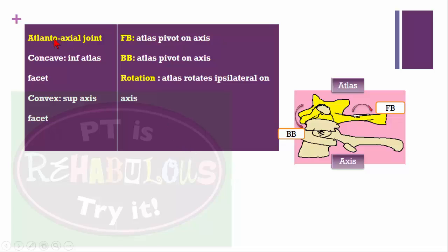Arthrokinematics of the atlanto-axial joint: the concave surface is the inferior atlas facet and the convex surface is the superior axis facet, with the dens being convex. During flexion or forward bending, the atlas pivots on the axis — since the atlas is seated on the axis like a ring around the dens. During extension, the atlas again pivots on the axis. During rotation, the atlas rotates ipsilaterally on the axis.